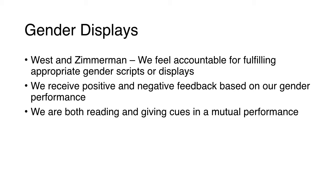If I came into class entirely dressed in male clothing, including a walking cane and a false mustache, would you give me a weird look? Would I take that as feedback that my gender display is inappropriate? What we're doing is reading each other's cues and engaging in a performance together — we're trying to perform gender for each other and we feel accountable for doing so. When men and women marry, they feel accountable for fulfilling appropriate wifely or husbandly duties. Sociologists study what the changing gender displays are over time and whether younger people feel differently about gender displays than older people.